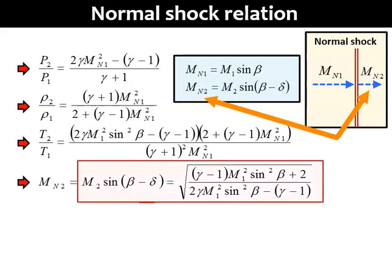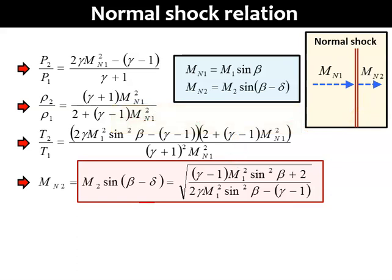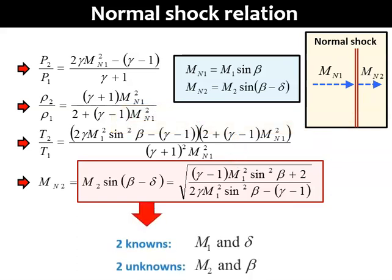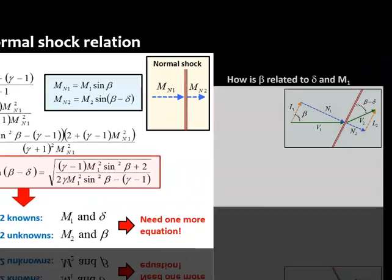Also, the downstream flow after crossing the shock is MN2, which is equal to M2 sine beta minus delta. When we look at this MN2 equation, we can identify two known parameters, M1 and delta, and two unknown parameters, M2 and beta. To solve for these two unknowns, we need two equations. We already have this MN2 equation. We need one more equation to be able to solve for M2 and beta.